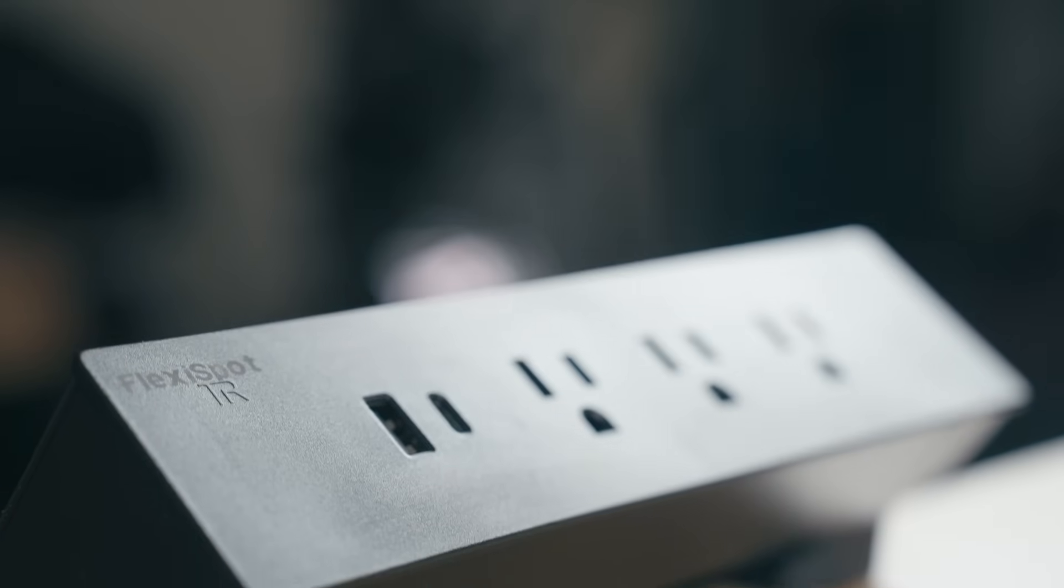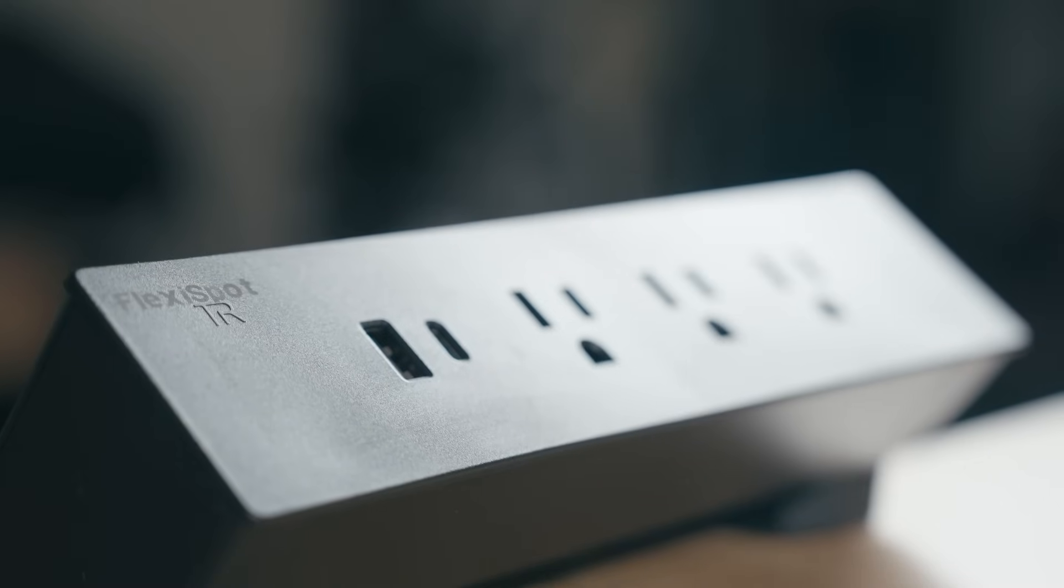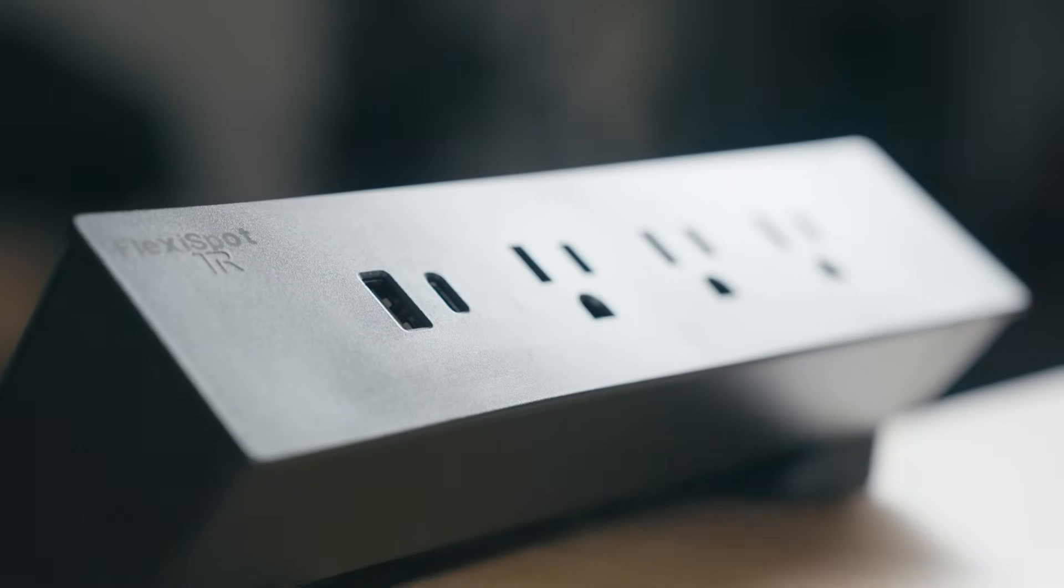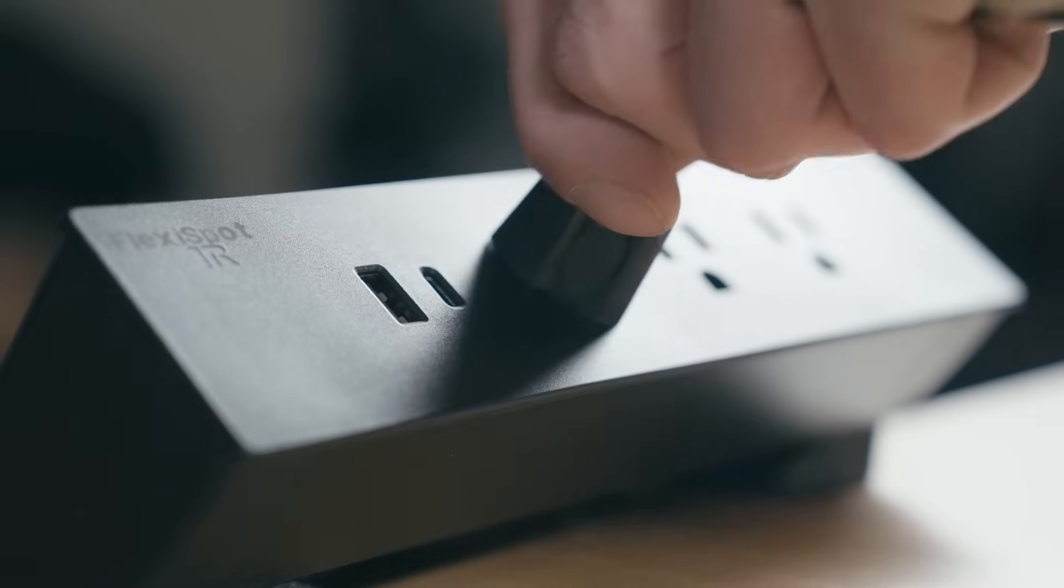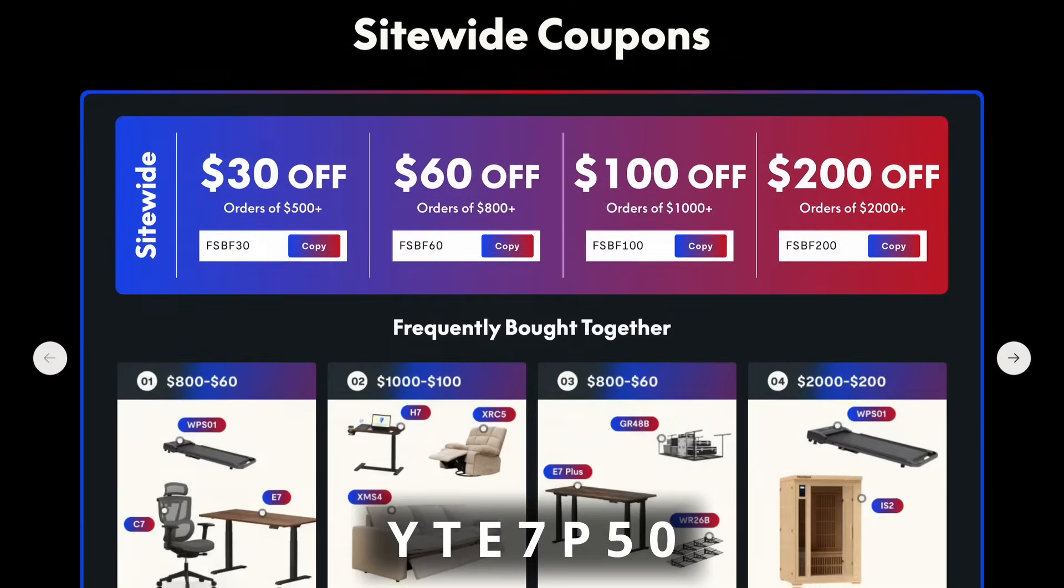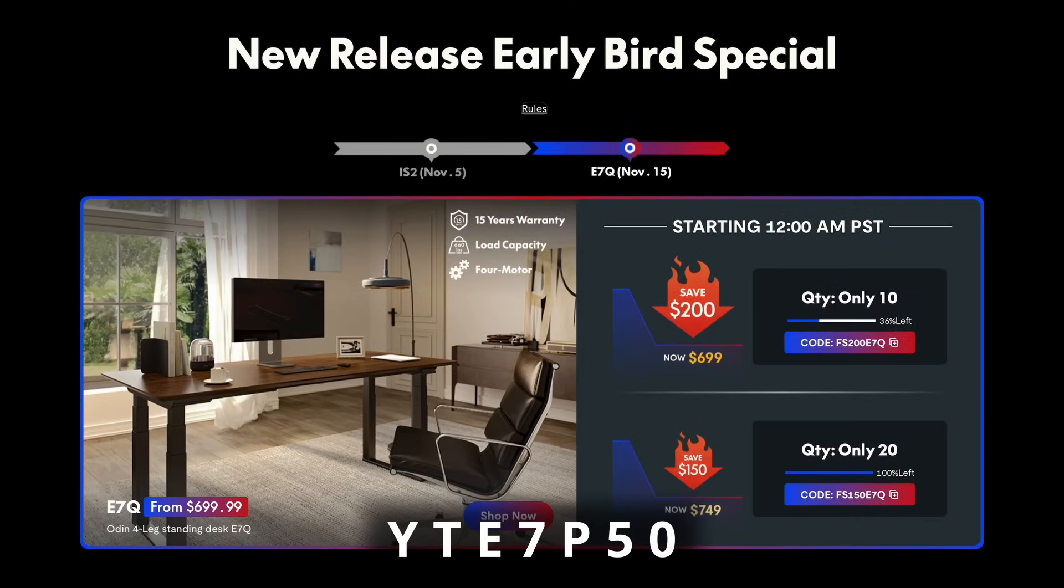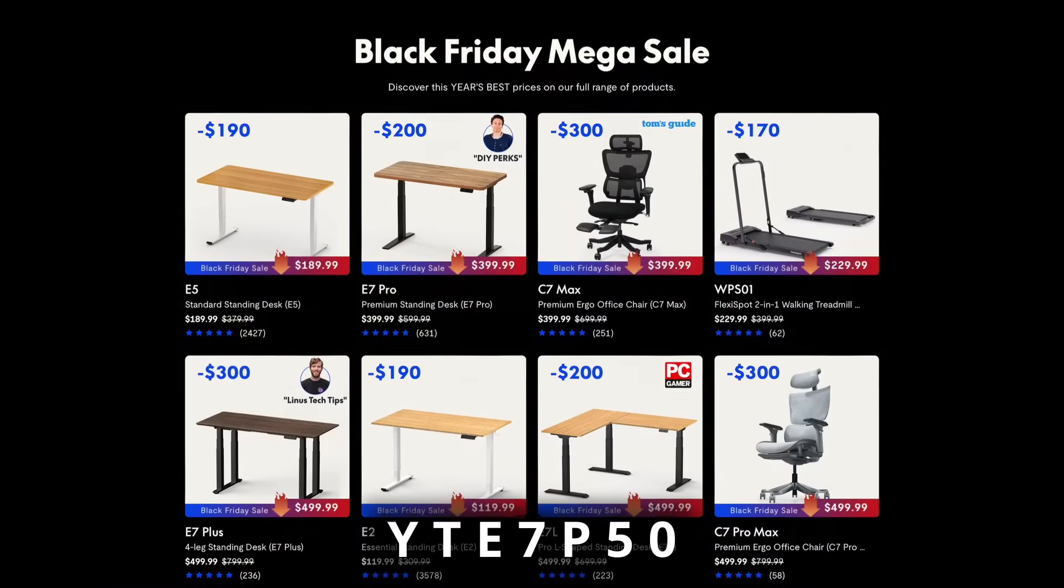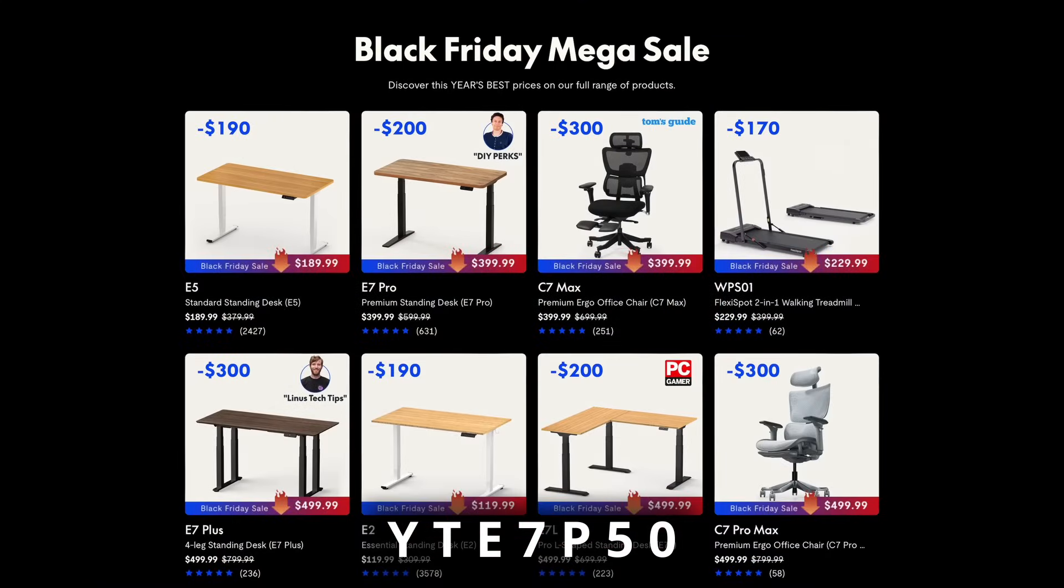And Flexispot also offers a variety of accessories, like this PS015, which cleverly clamps to the desktop and provides a variety of quick power options. The Flexispot Black Friday Sale begins now. Use my code YTE7P50 to get extra discounts and get your own L-shaped standing desk. Thanks so much to Flexispot. Let's jump back in.